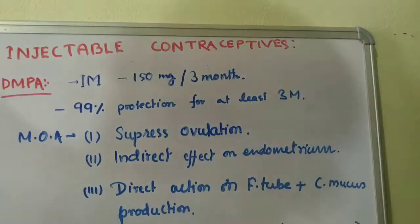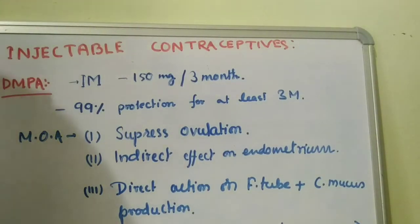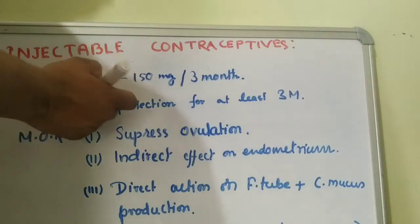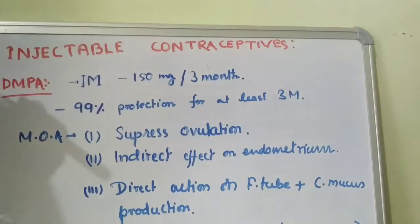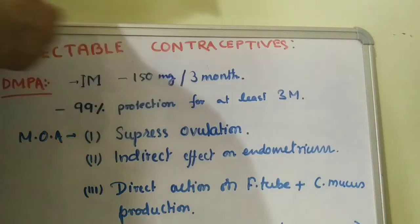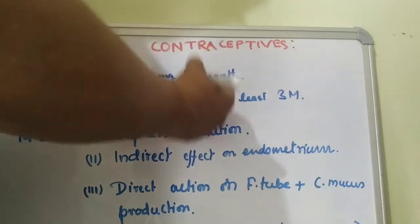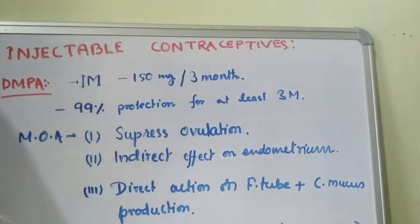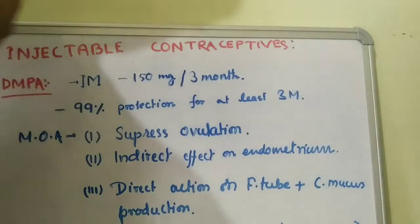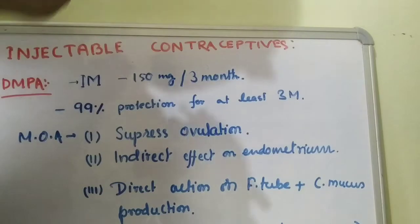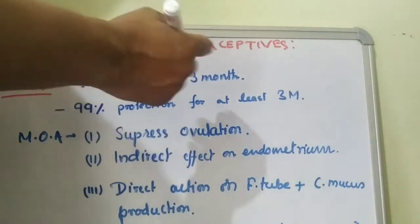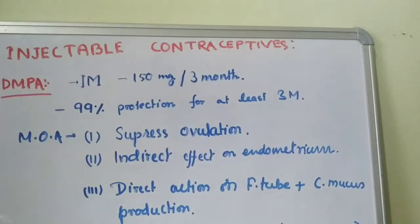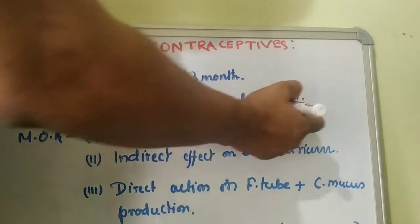Let's see how DMPA works. The dose of DMPA is 150 mg per 3 months. Every three months it is 150 mg. In 99% of women it provides good protection, at least for 3 months.